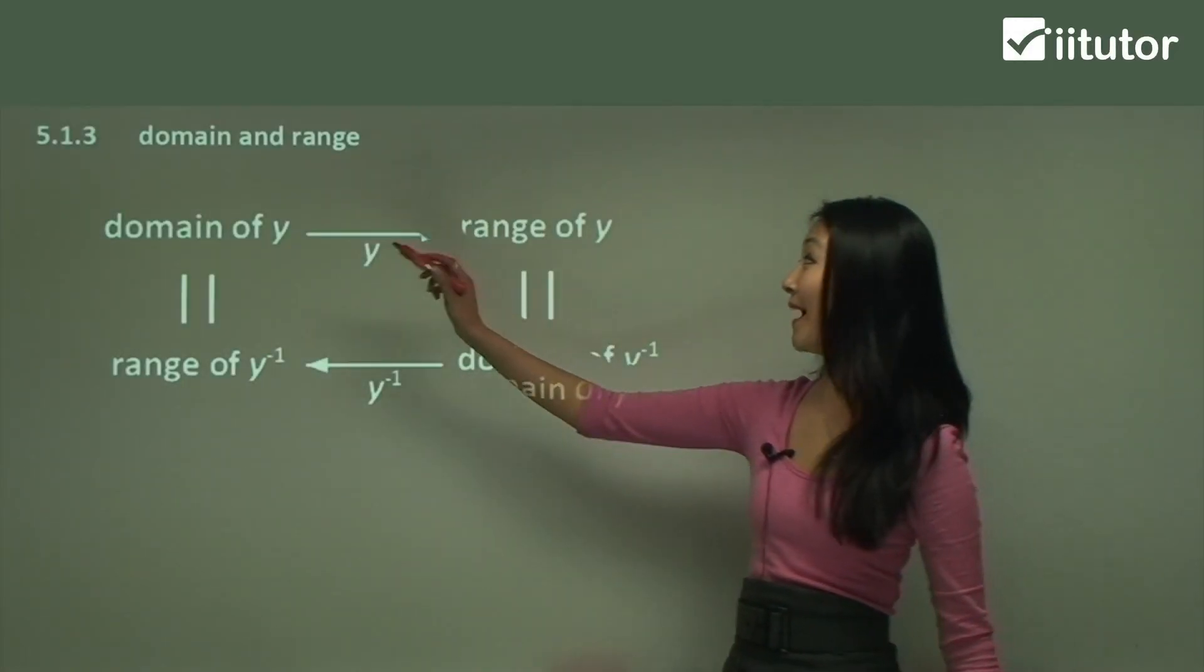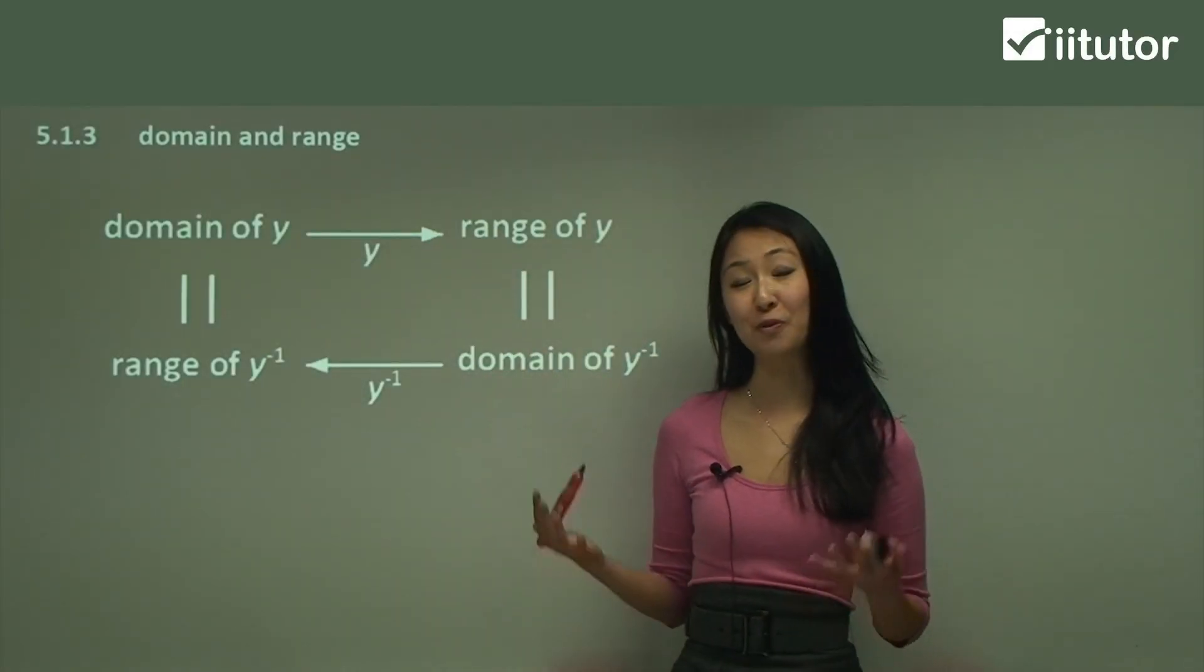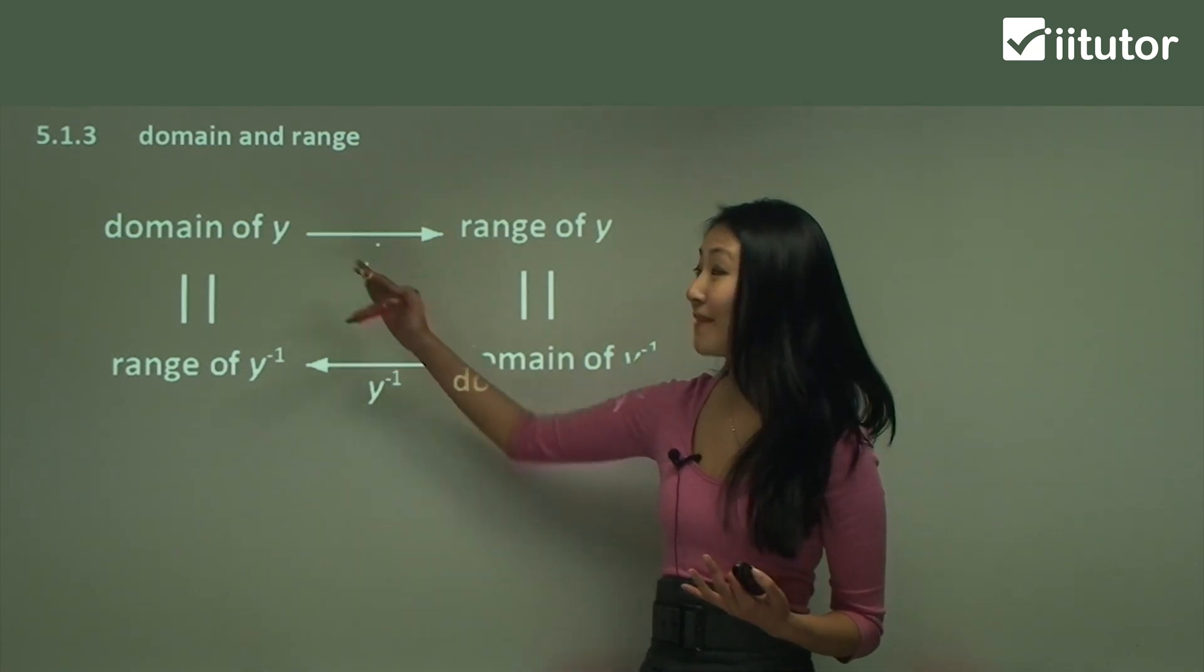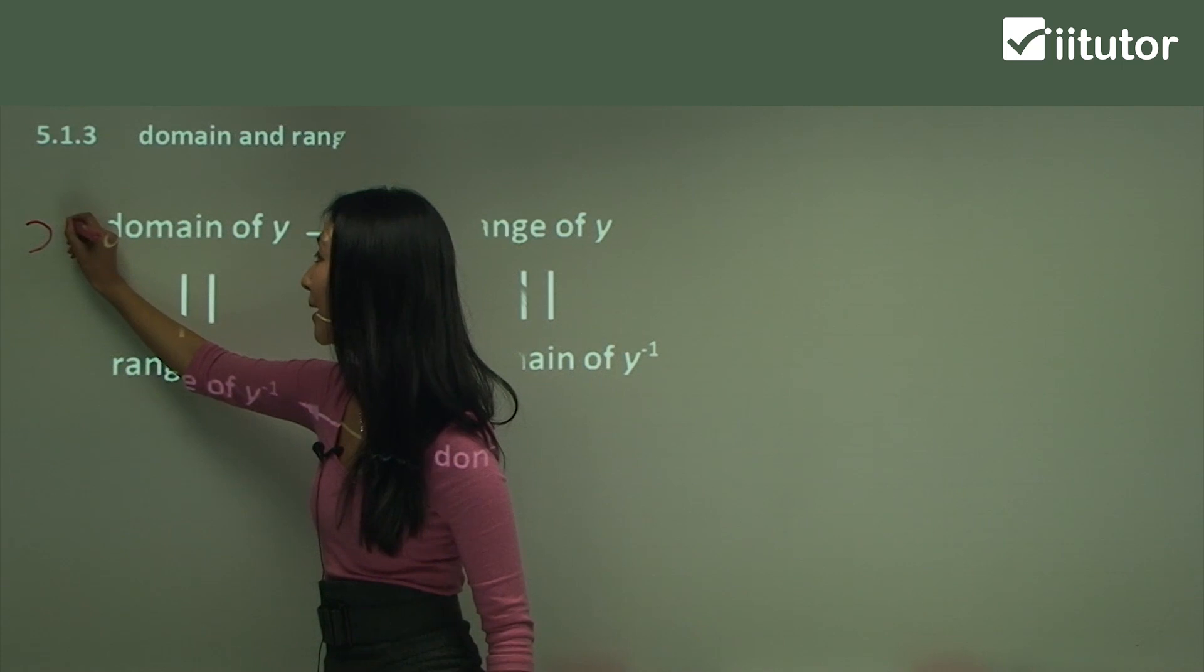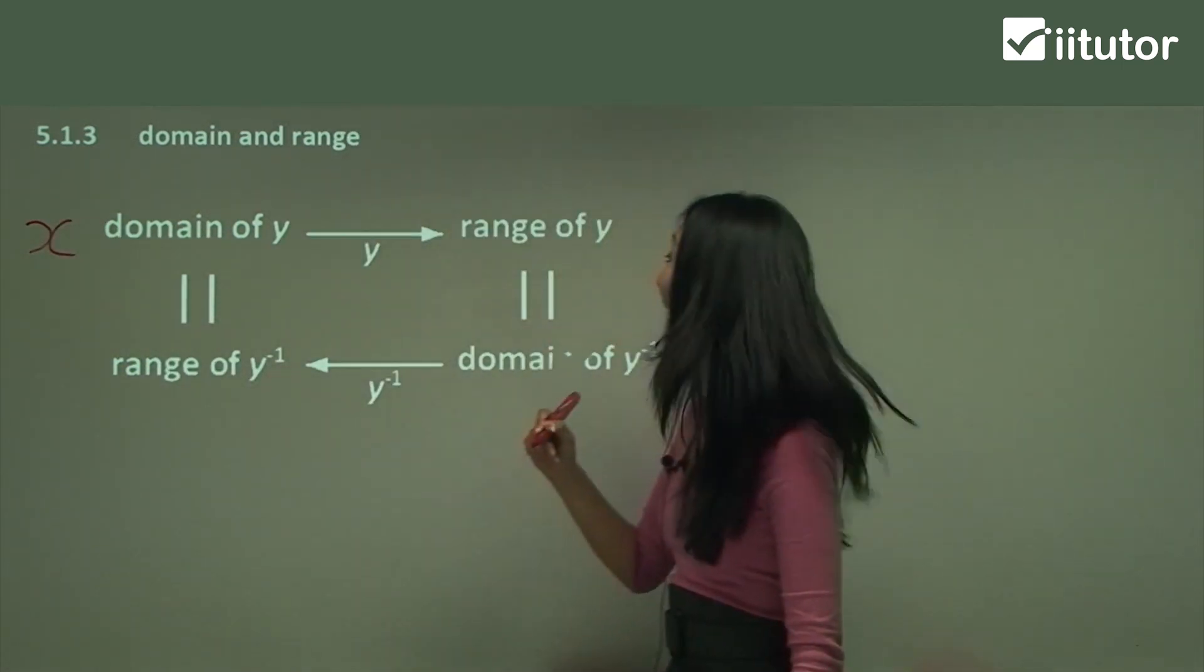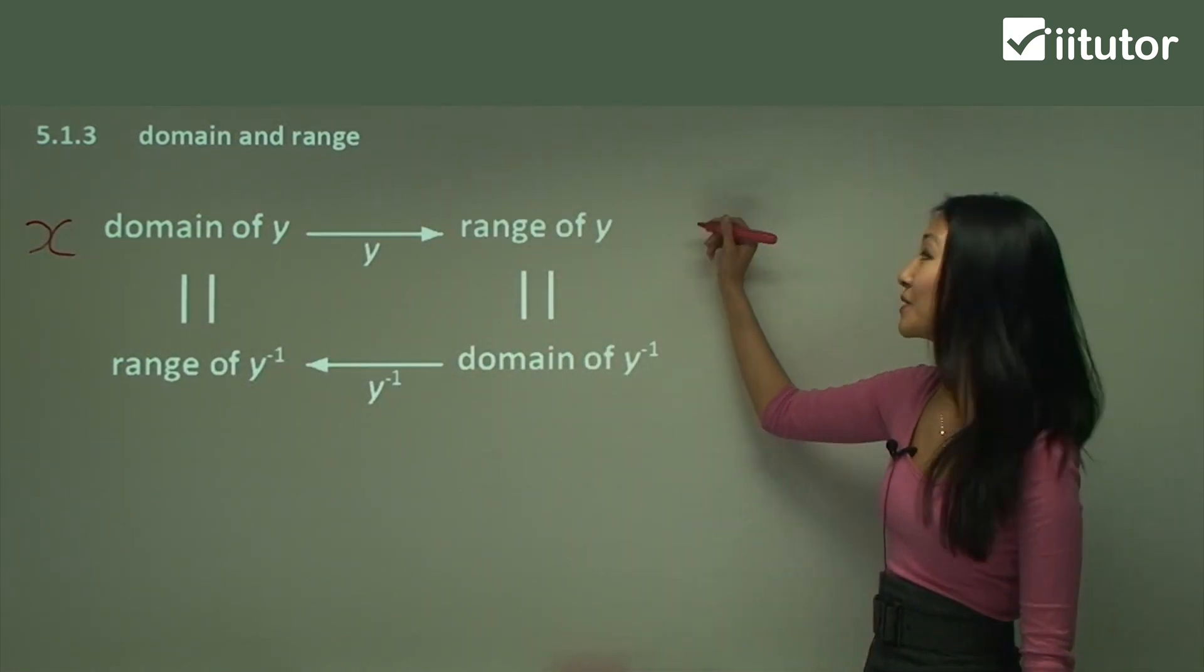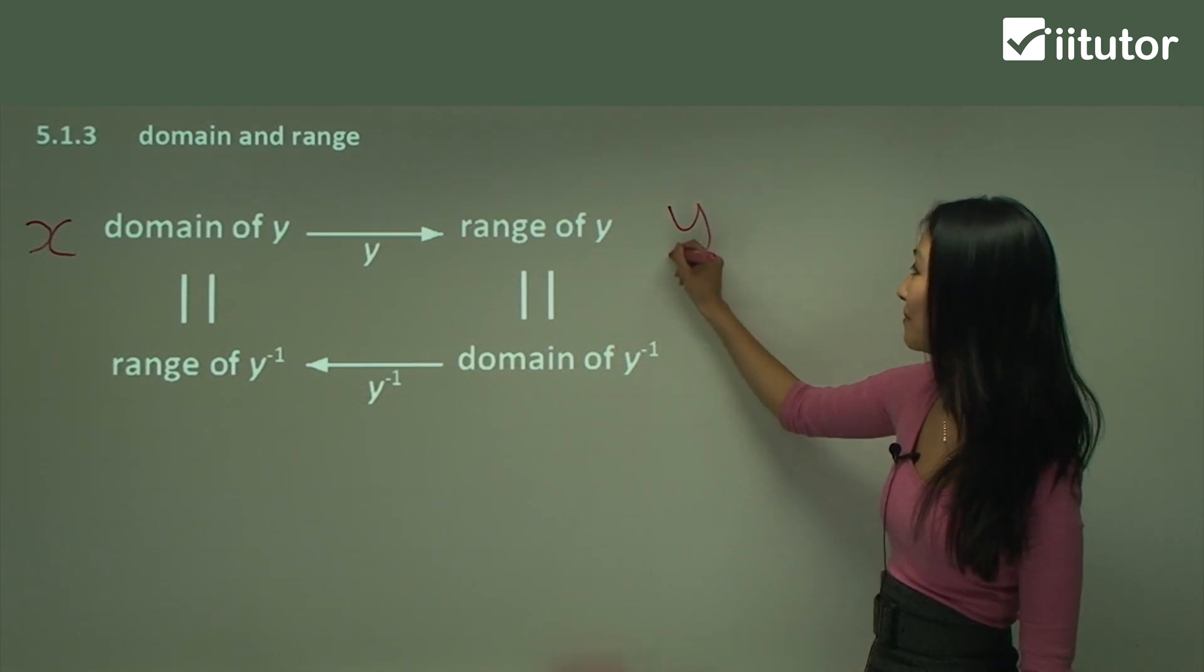We've learned previously about the domain and range of your normal functions. And so domain, if you remember, was finding out what the x value could be, wasn't it? Whereas finding the range was finding out what the y values could be.